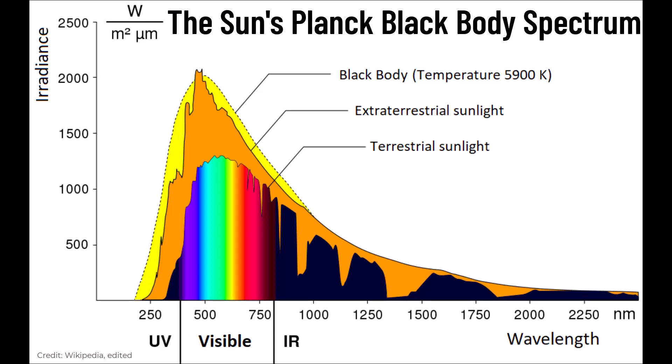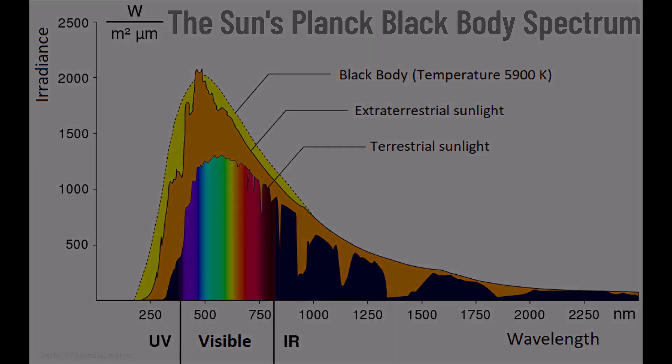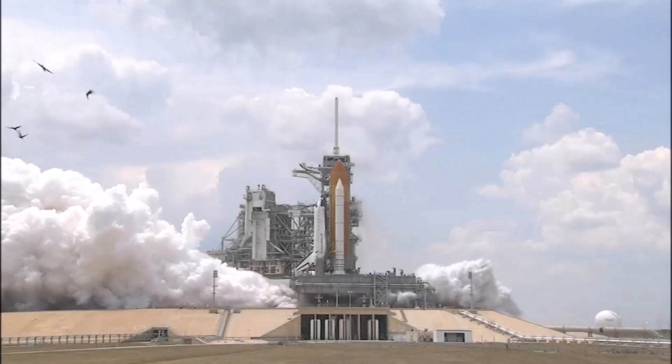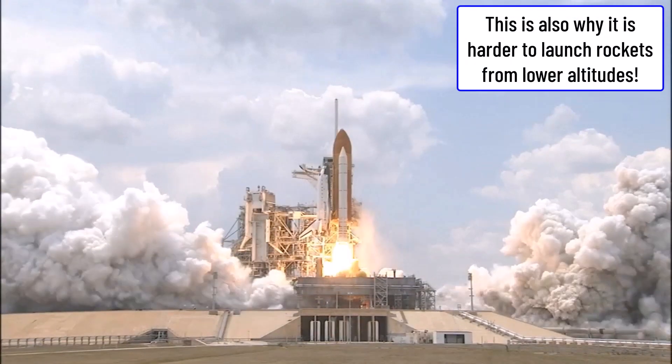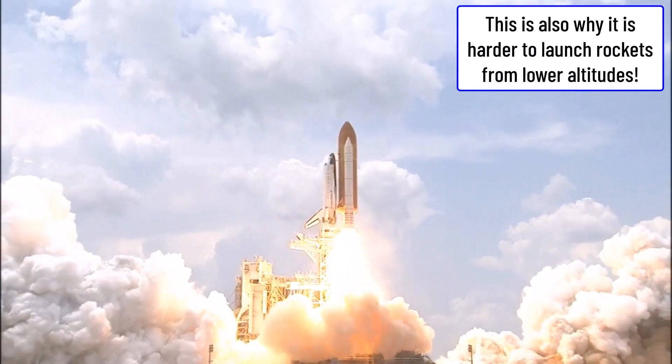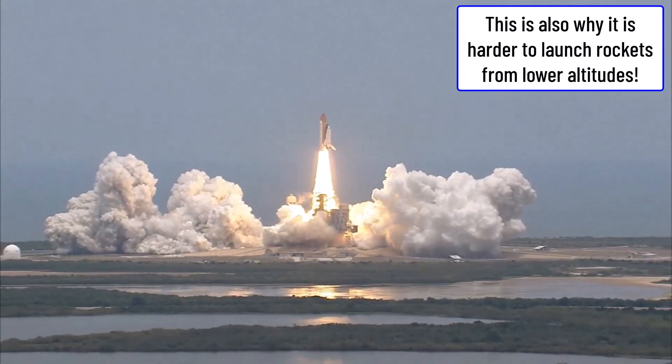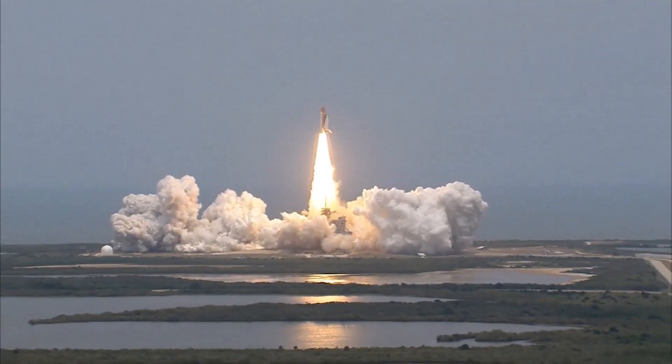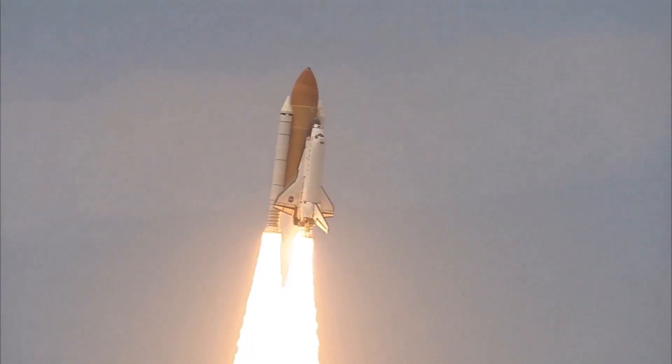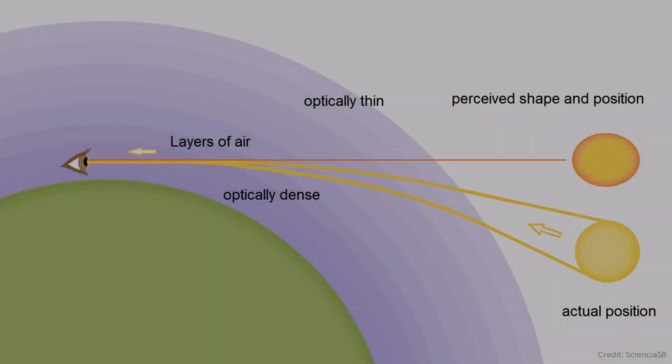Instead, for that, we now must consider how this light interacts with Earth, notably the atmosphere. As you go higher up and gain altitude, Earth's atmosphere gets less dense, as the strength of gravity is weaker, allowing for lighter and more energetic particles to escape and heavier ones to remain near the surface. This has the added effect of changing the optical density of the atmosphere, making it denser near the ground.